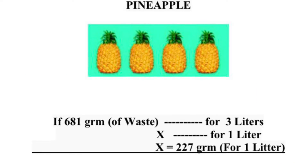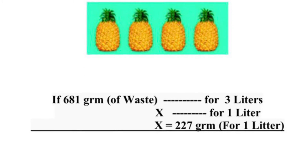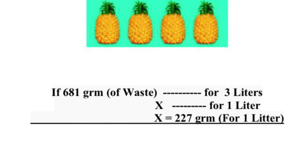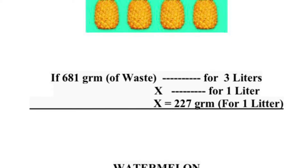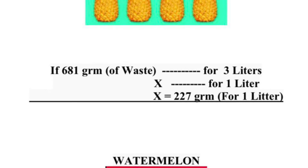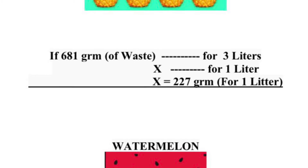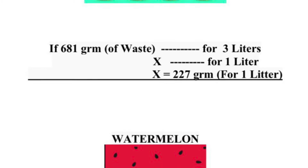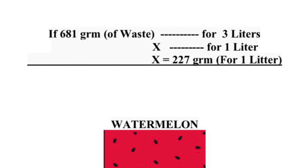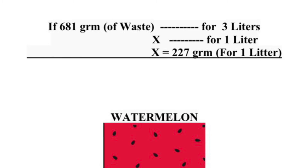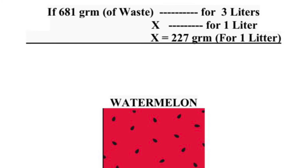In order to know how much is the waste for one liter, we did a rule of three, knowing that if for 681 grams of waste it is for three liters, the result will be 227 grams for one liter.